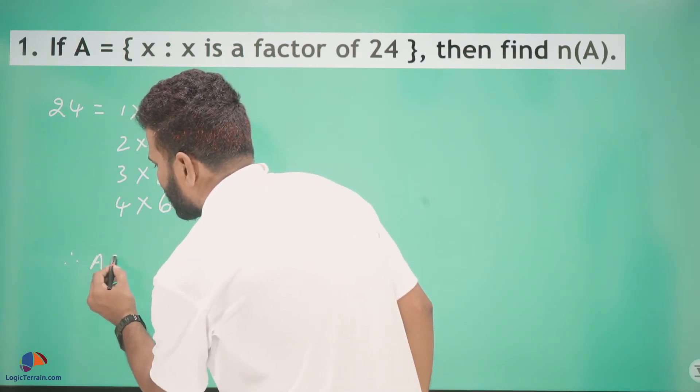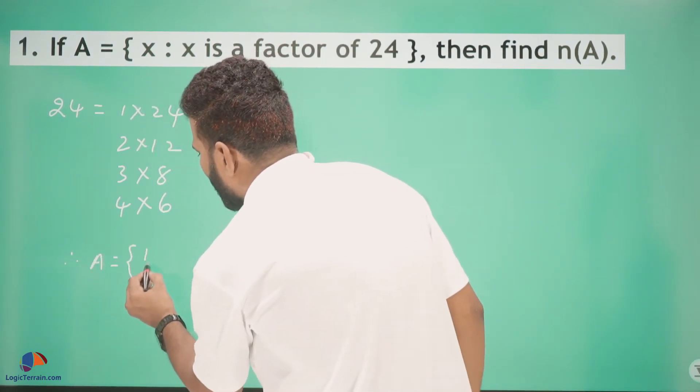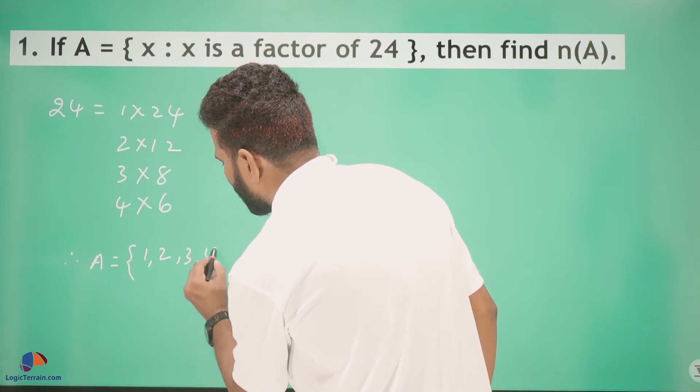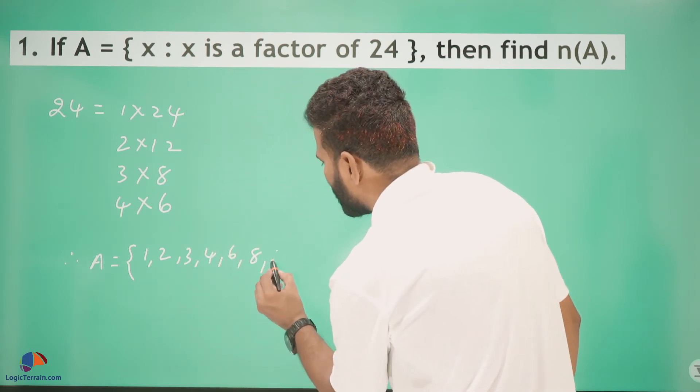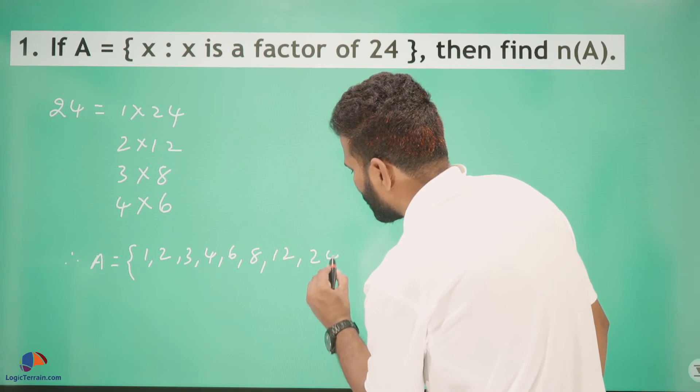Therefore, the set A = {1, 2, 3, 4, 6, 8, 12, 24}.